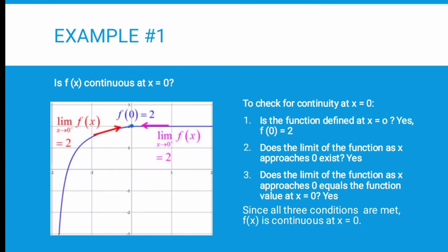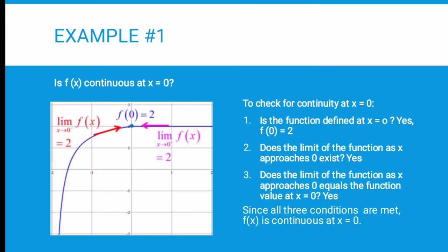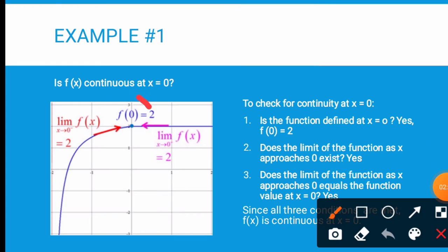For you to understand, here is example number one: is f(x) continuous at x equals zero? We must first check the continuity at x equals zero. Looking at the graph, the first question is: is the function defined at x equals zero? The answer is yes, because f(0) equals 2, as you can see in the graph.